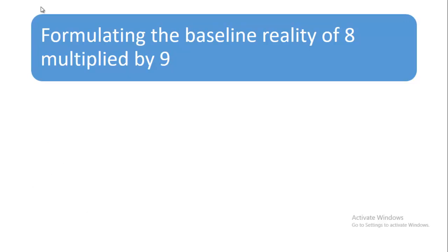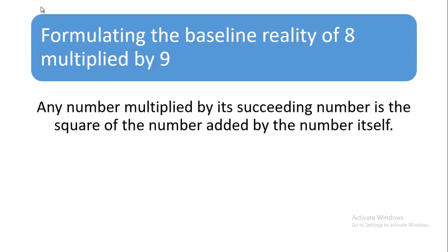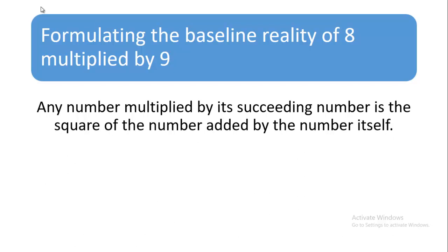Formulating the baseline reality of 8 multiplied by 9: any number multiplied by its succeeding number is the square of the number added by the number itself.